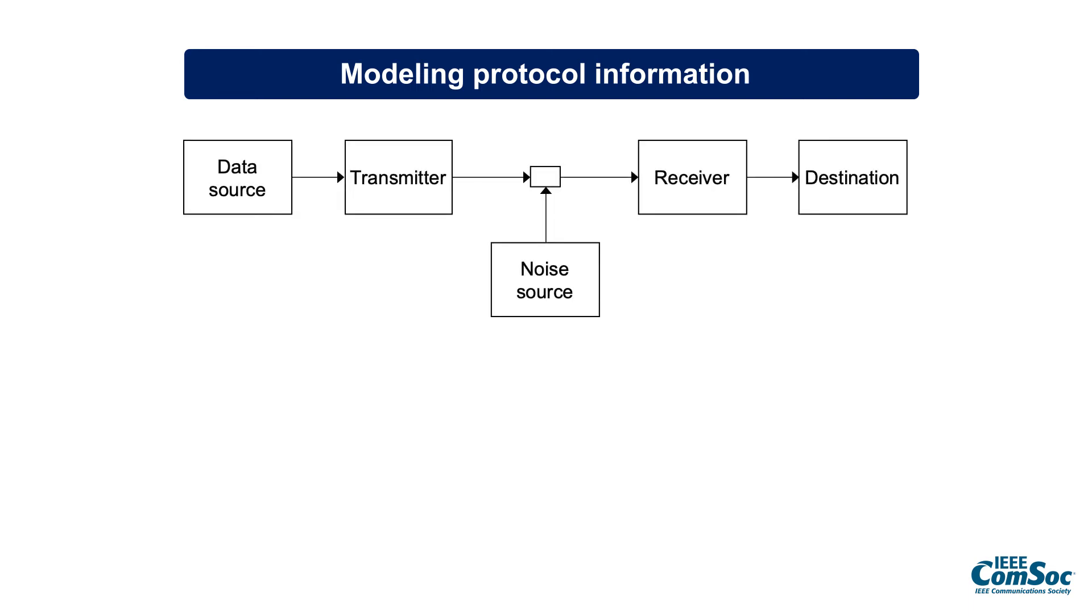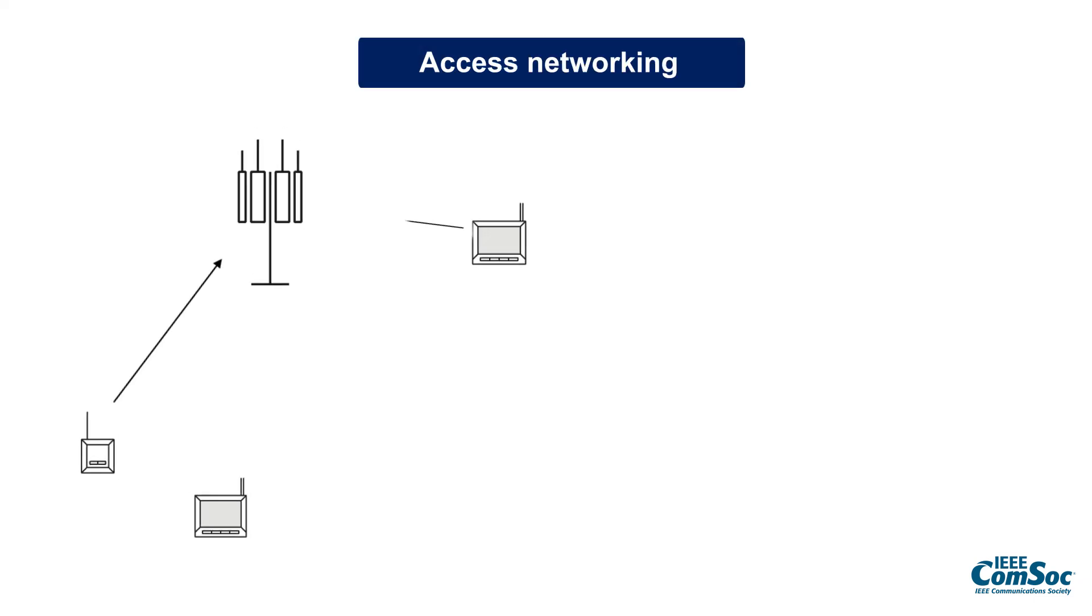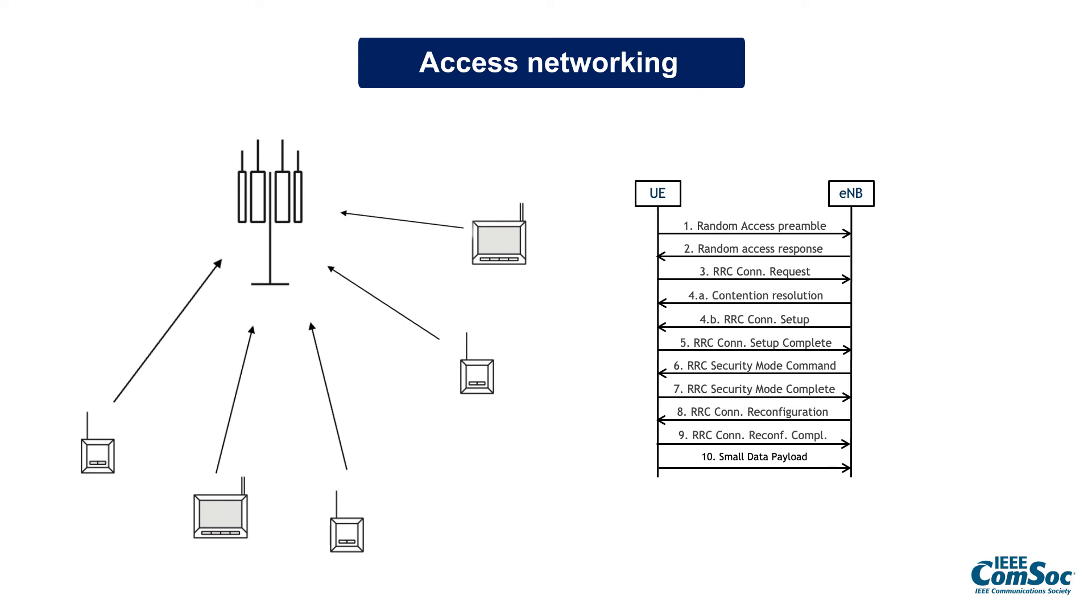In order to model protocol information, we need to extend Shannon's one-way communication model to a two-way communication model, because in ultra-reliable low-latency communication, we normally expect acknowledgement from the receiver for the received data. Hence, the system should support transmission of protocol information. Both control and data are transmitted through the wireless channel and they have to be reliably received. In the paper, we present the challenges of access networking and the impact of protocol steps on latency and reliability.